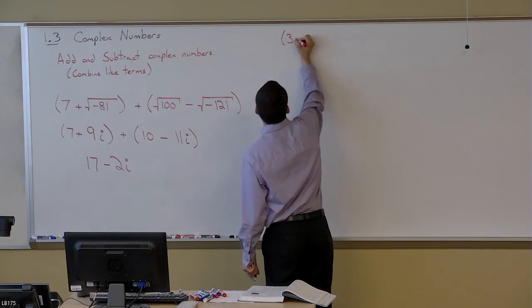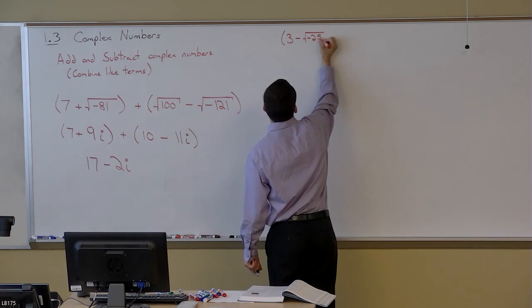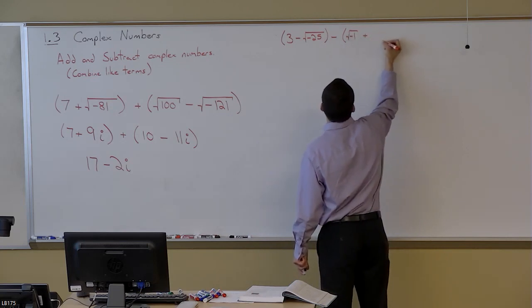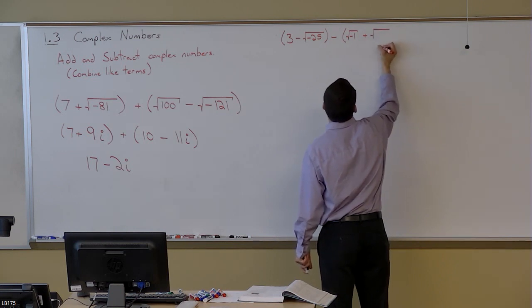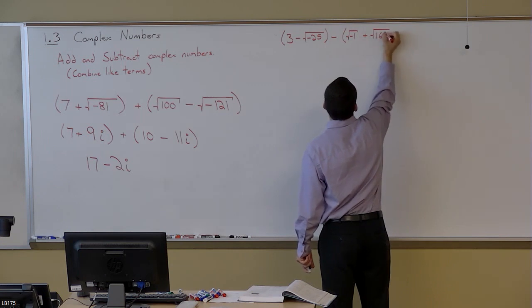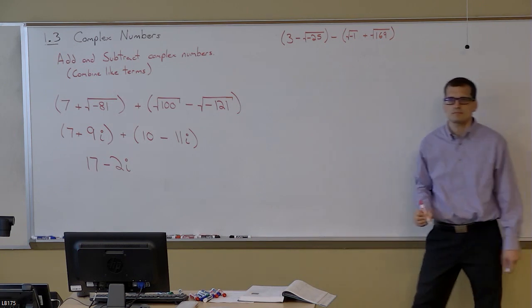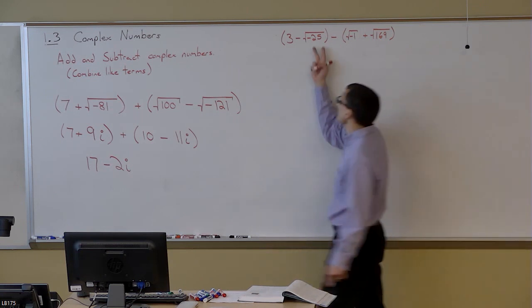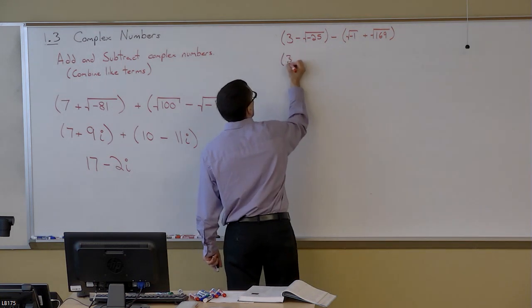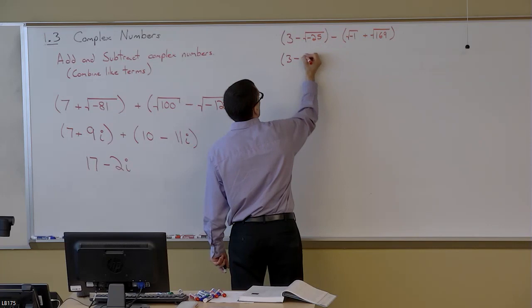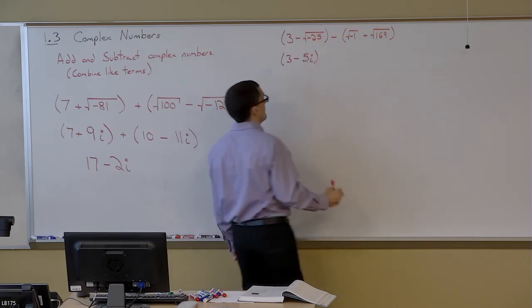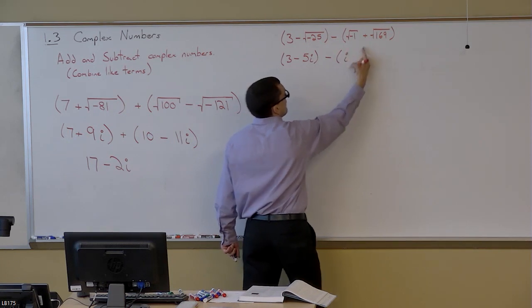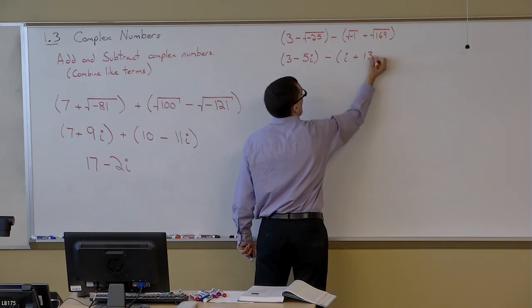Let's take 3-√(-25) - √(-1) + √169. Now before I distribute this minus sign, I want to simplify the square roots that I see. That's going to be 3 minus—√25 is 5, square root of the negative is i—so 3-5i minus √(-1) is i. The square root of 169 is 13.